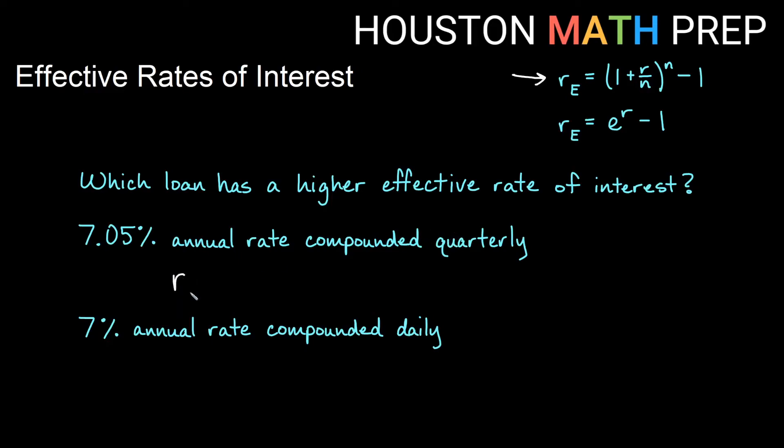So our effective rate for this one is going to be 1 plus, if we turn this into a decimal, that will be 0.0705. Over compounded quarterly tells us that n is 4, 4 times per year, to the 4 minus 1. And if we round this to three places, we will get an effective interest rate of 7.239%.